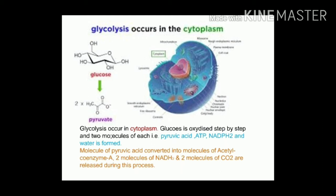For this purpose, glucose — a type of carbohydrate — is oxidized step by step inside the cell. This is called cellular respiration. Cellular respiration has two methods: aerobic respiration and anaerobic respiration. Aerobic respiration means oxygen is used, and anaerobic respiration means oxygen is not used.